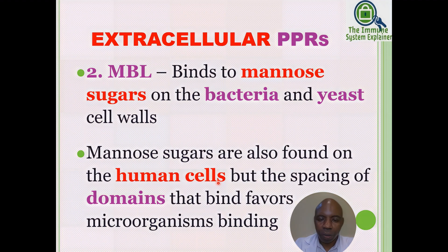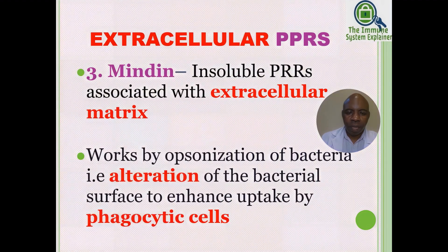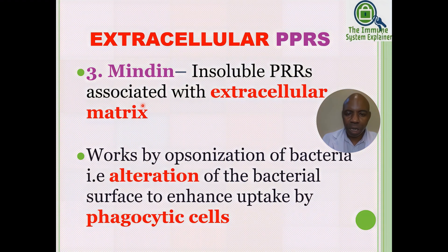MBL preferentially binds microorganisms compared to human cells. Mindin is an insoluble PRR associated with the extracellular matrix, and it works by opsonization of bacteria — that is, alteration of the bacterial surface to enhance attack by phagocytic cells. The working of mindin is no different from MBL and CRP.